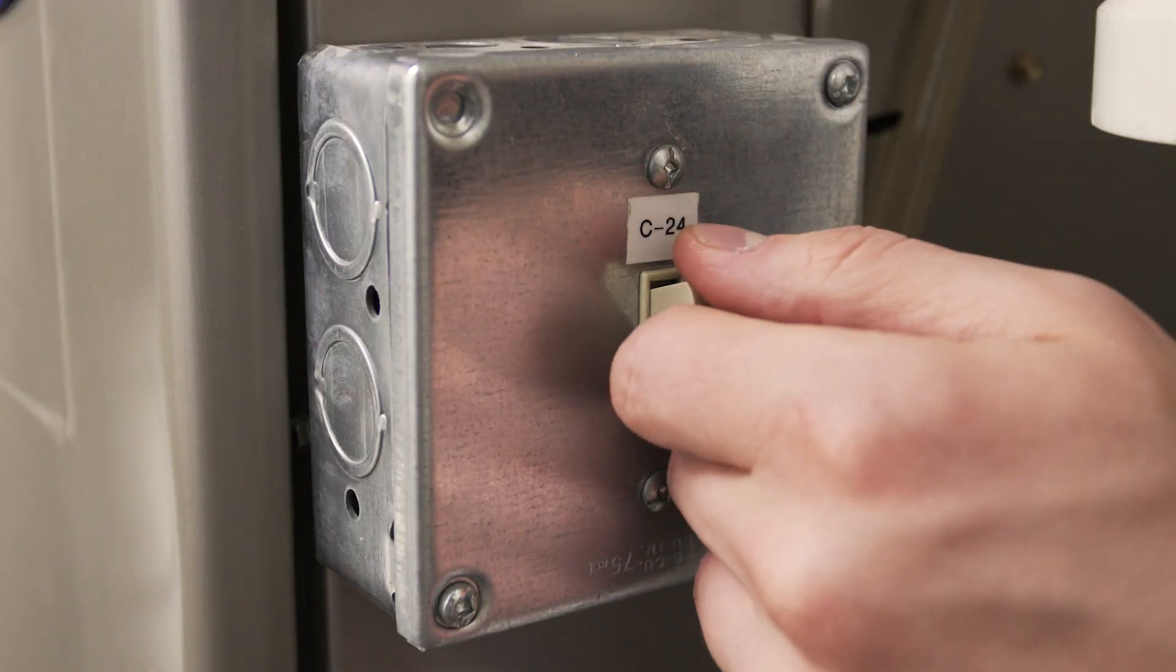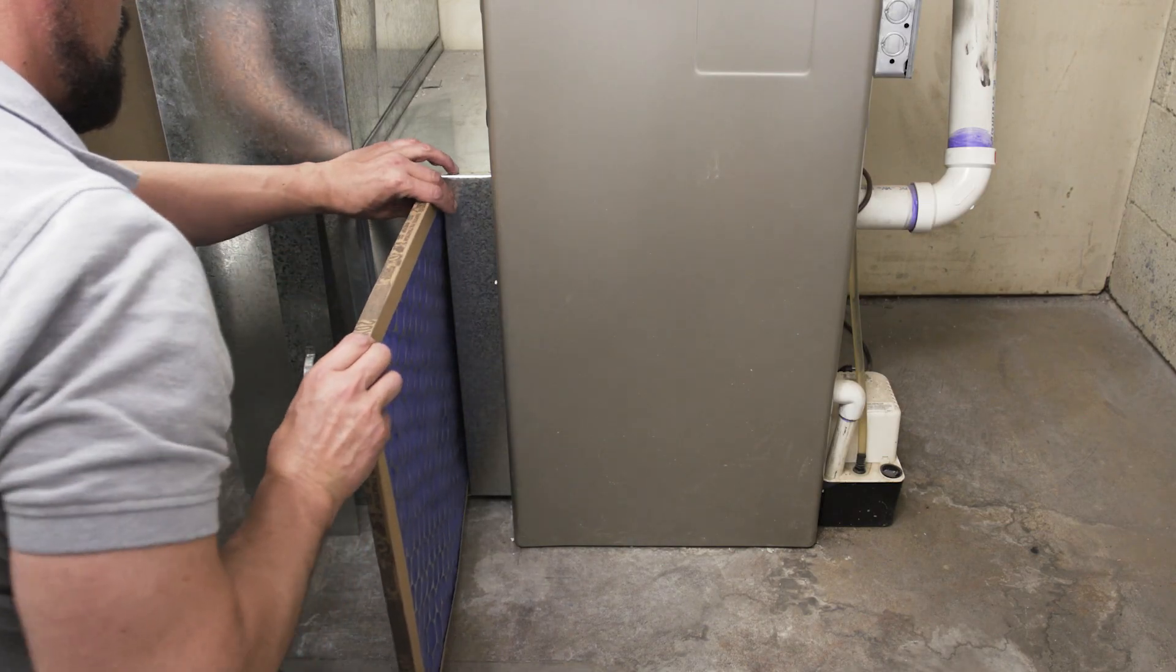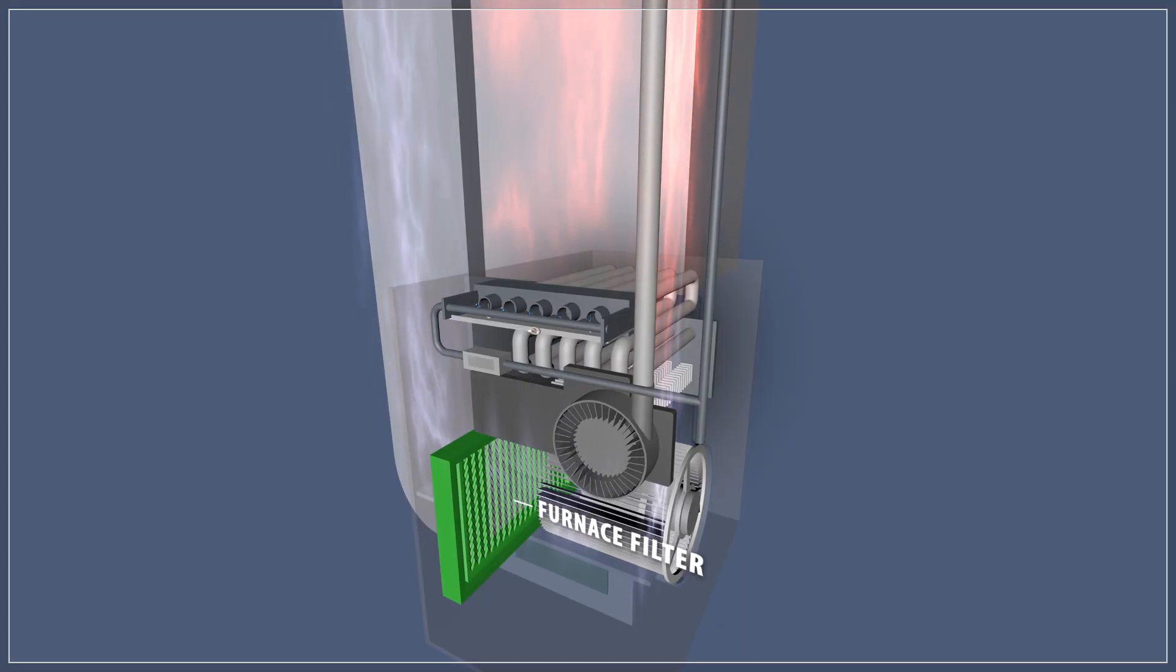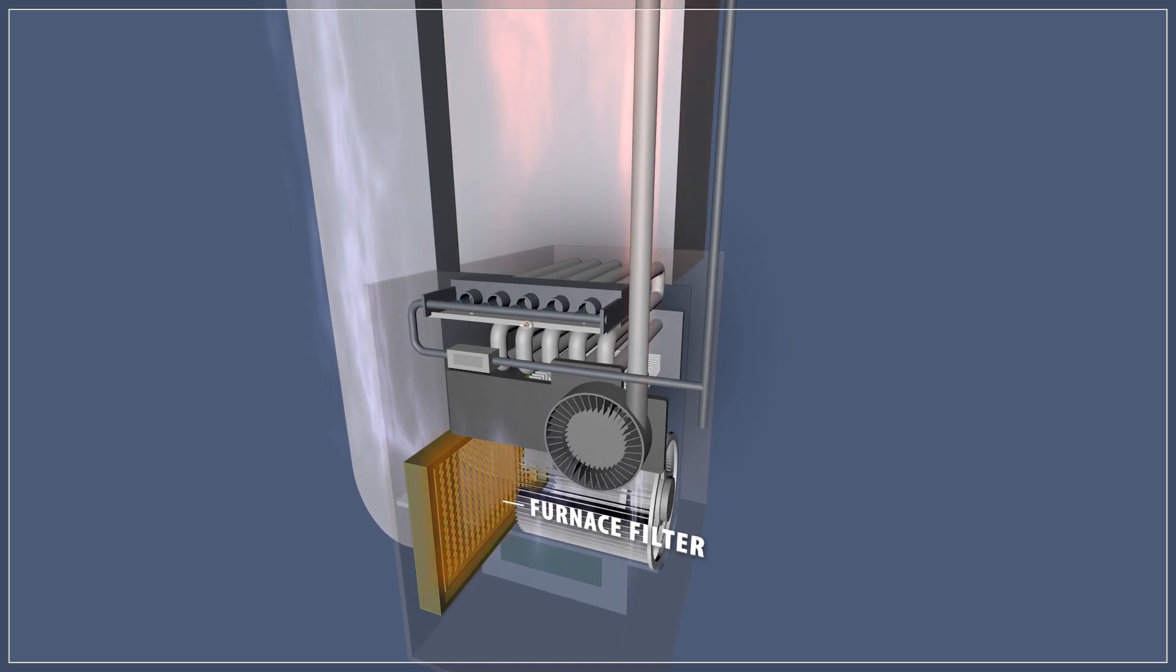If the furnace ignites and the blower fan is running, but there's no heat coming out of the registers, then something might be restricting the airflow. Turn off your furnace and check the filter. The air filter is located next to the cold air return duct. As the filter collects dust it begins to restrict the airflow. This is why it's essential to replace the filter every three to six months.